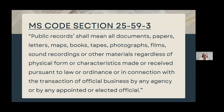The Mississippi Code provides the following definition of a record for government employees: public records shall mean all documents, papers, letters, maps, books, tapes, photographs, films, sound recordings, or other materials, regardless of physical form or characteristics, made or received pursuant to law or ordinance or in connection with the transaction of official business by any agency or by any appointed or elected official. Notice the phrase there in the middle: regardless of physical form or characteristics.